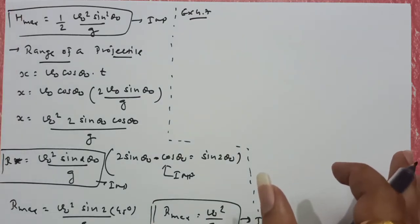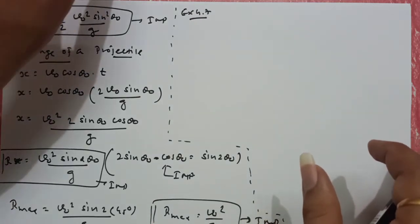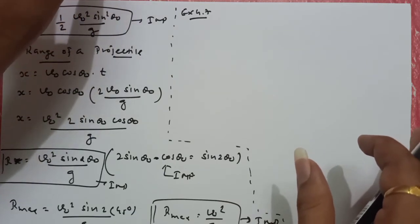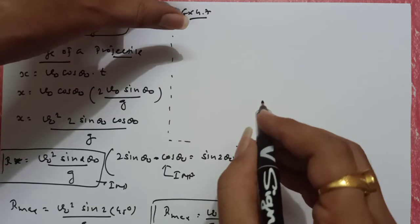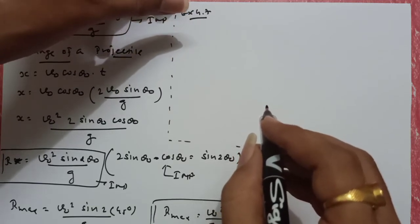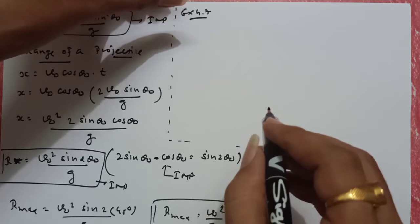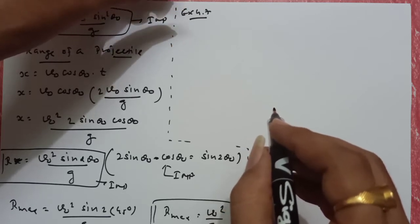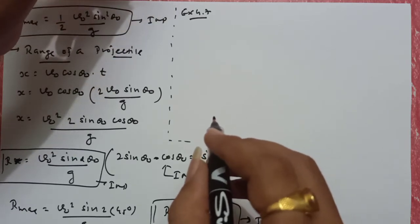Pay attention, my question read कर रहा हूँ. And Galileo in his book Two New Sciences stated that for elevations which exceed or fall short of 15 degree by equal amounts, the ranges are equal. Prove this statement.